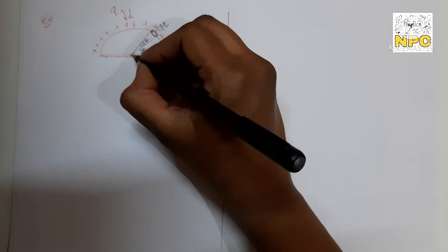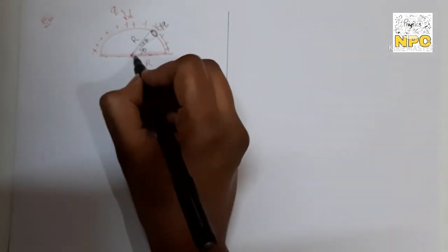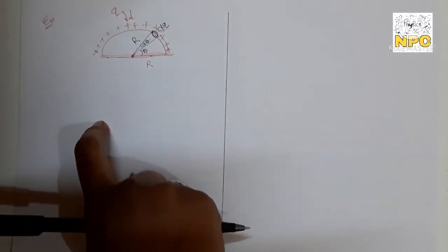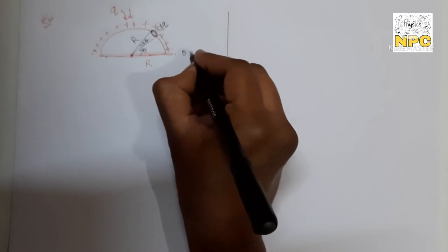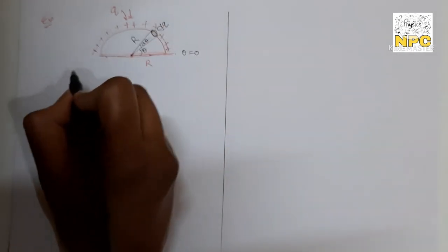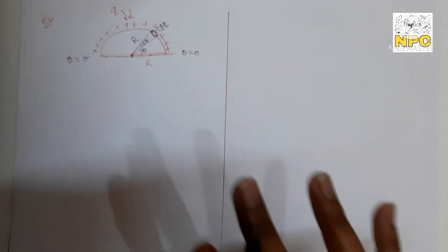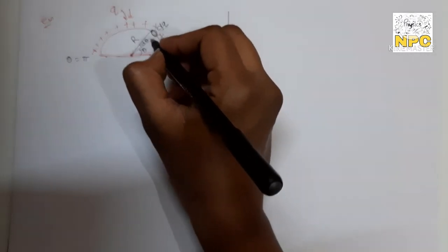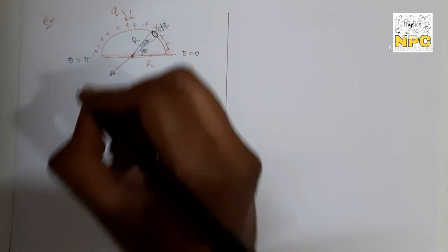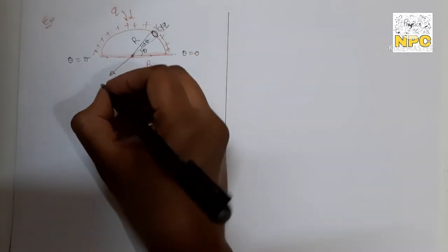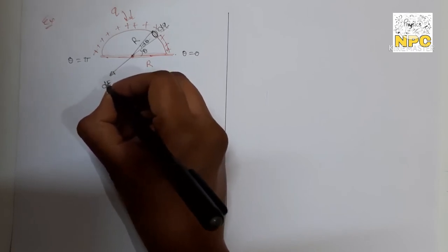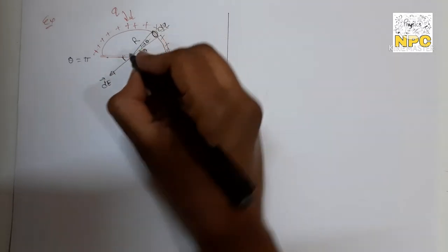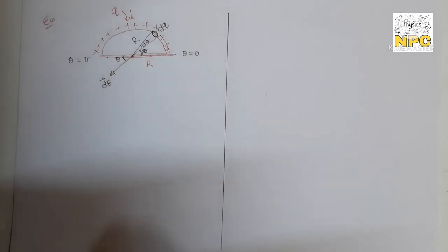The angle changes along the arc, so at angle θ we cut a small segment with angular width dθ and charge dq. The radius from the center to any point is always R. The limit for θ goes from 0 to π (180°). The electric field due to this small segment at the center is directed away from the charge.